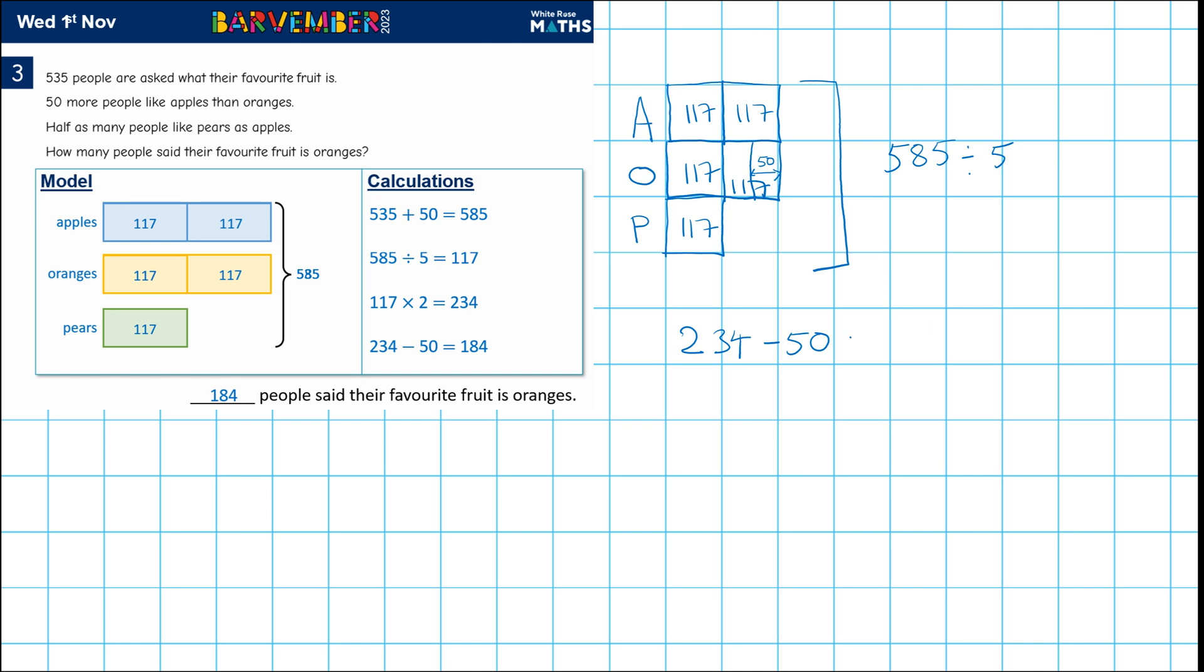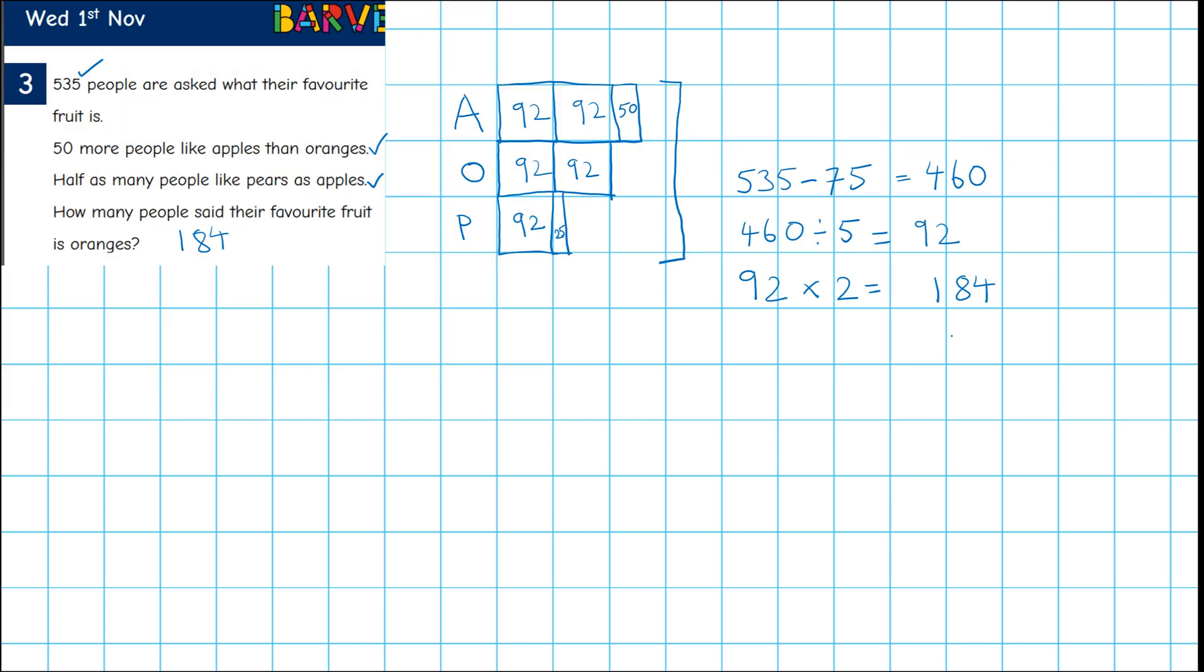Okay. But we have to subtract 50 to get to how many people said they liked oranges. So 234, we take 50 away and we get 184, which is the same answer that I got. Of course, it just looks different. There we go. So it just looks different. It's the same answer.